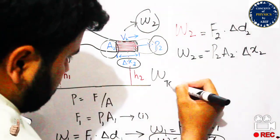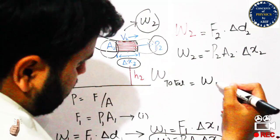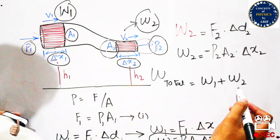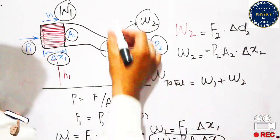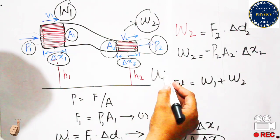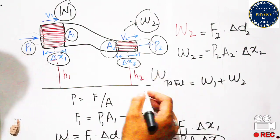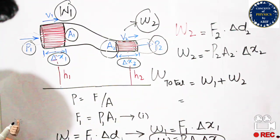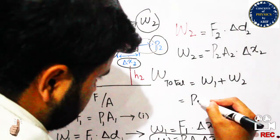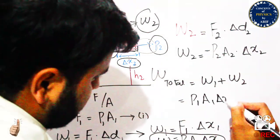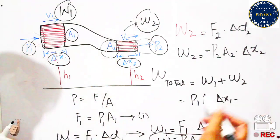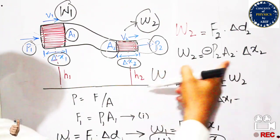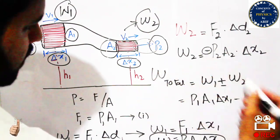The total work done on the whole pipe is the sum of work done in region one and region two: W_total equals p1·a1·delta x1 minus p2·a2·delta x2.